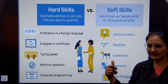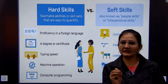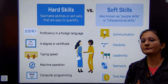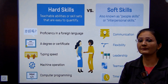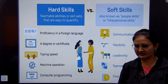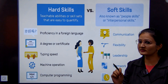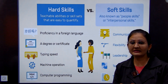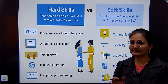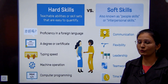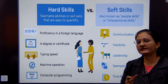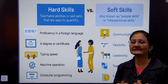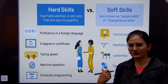Now, soft skills are people skills or interpersonal skills — qualities which are inbuilt. For example, communication: how you communicate with others and which language you use. Flexibility: how adaptable you are to a given situation. Leadership: what leadership quality you have. Teamwork and time management are also included. These are basically inbuilt qualities of any person, which are known as soft skills.